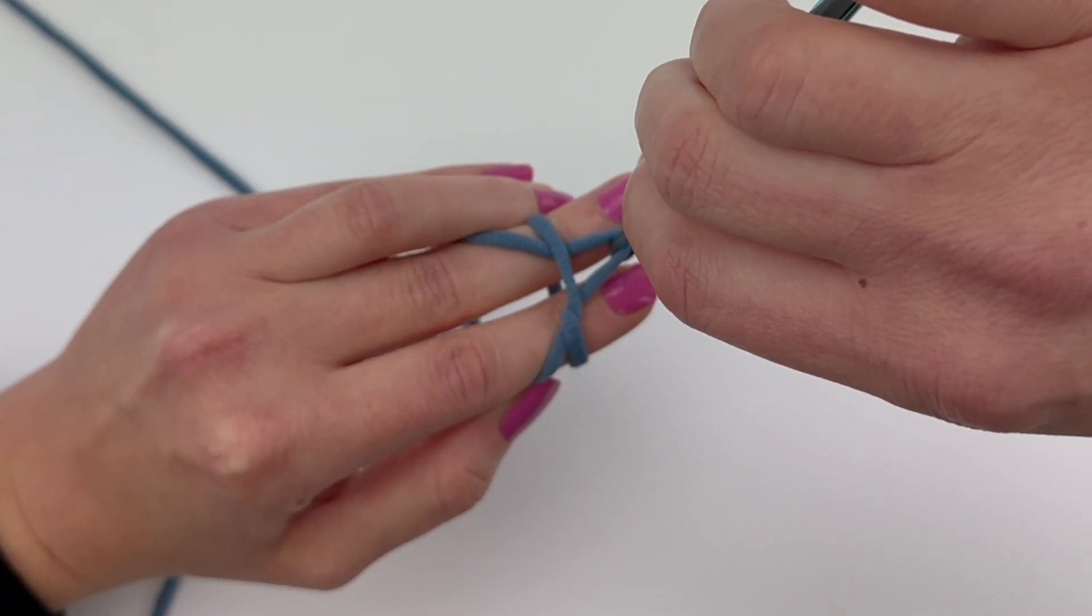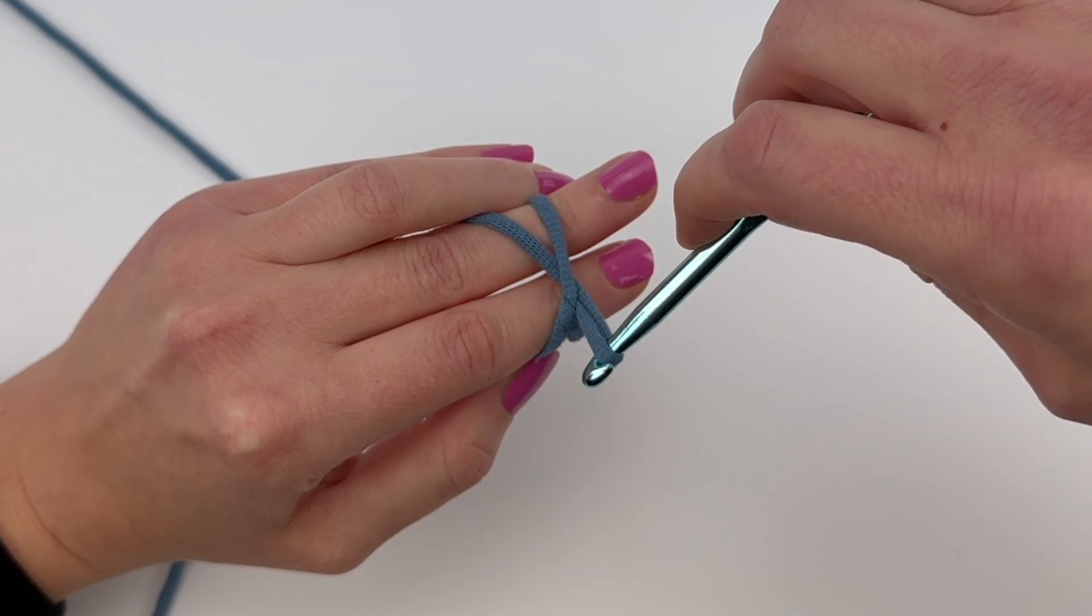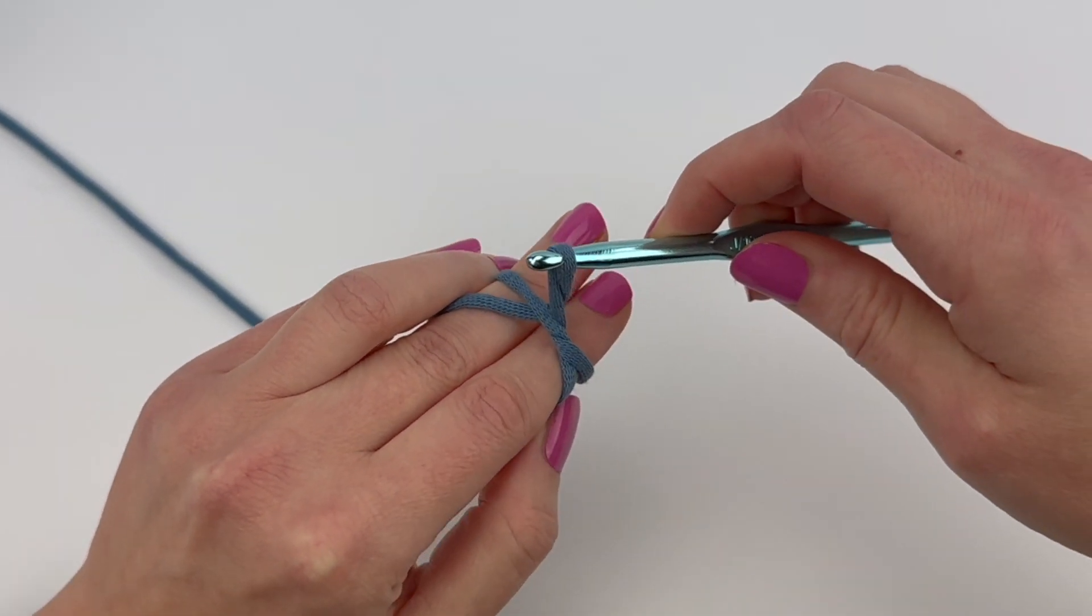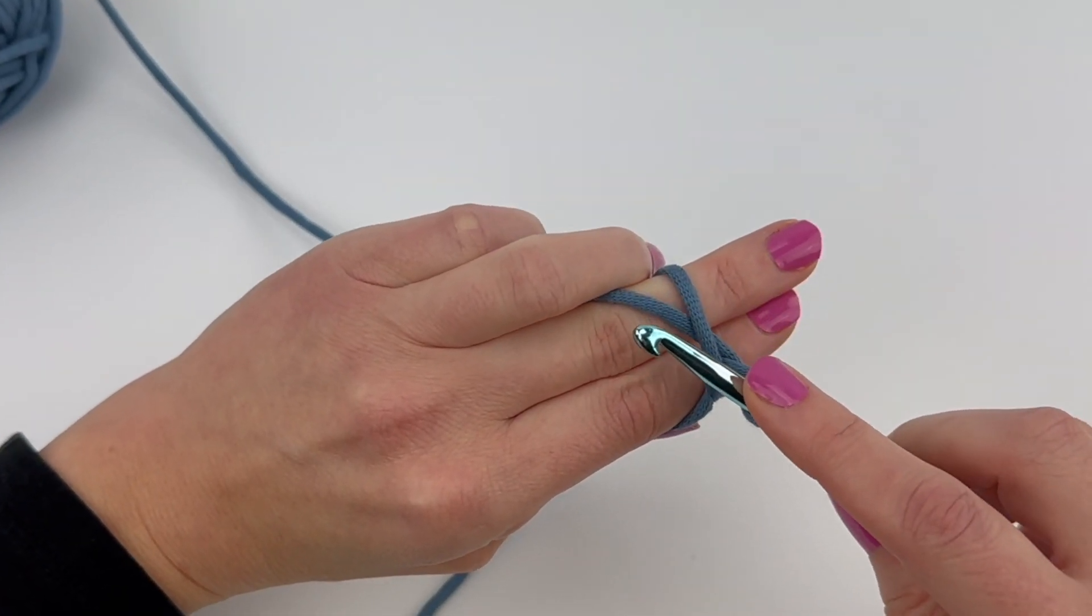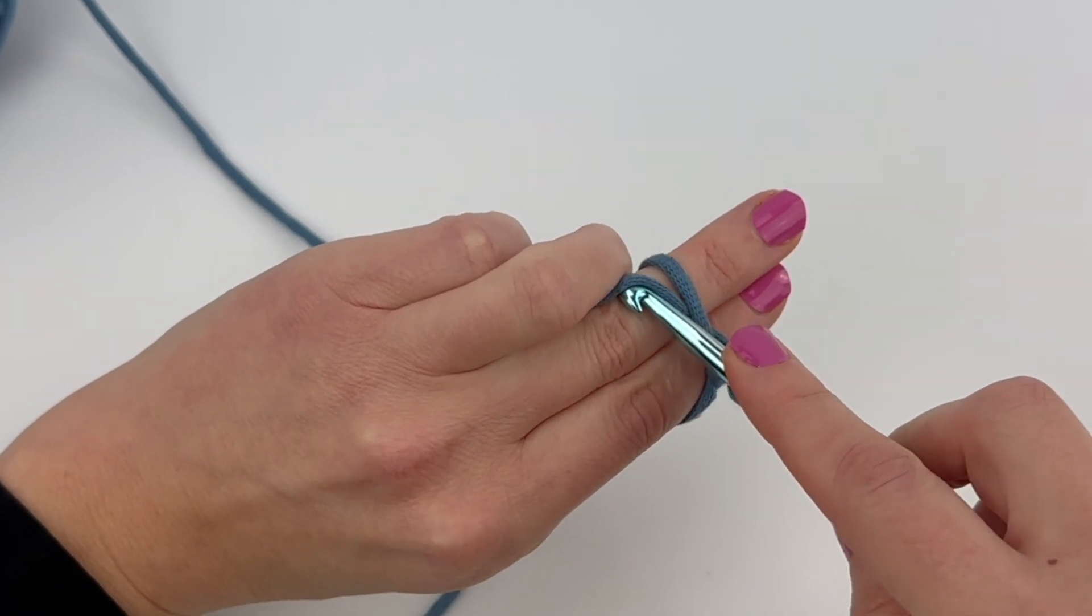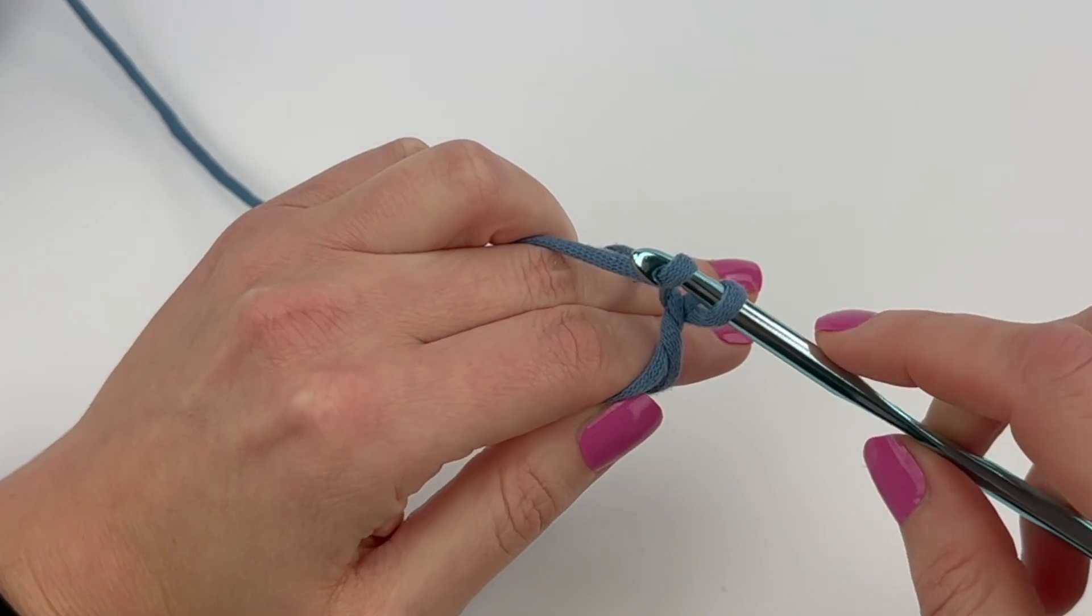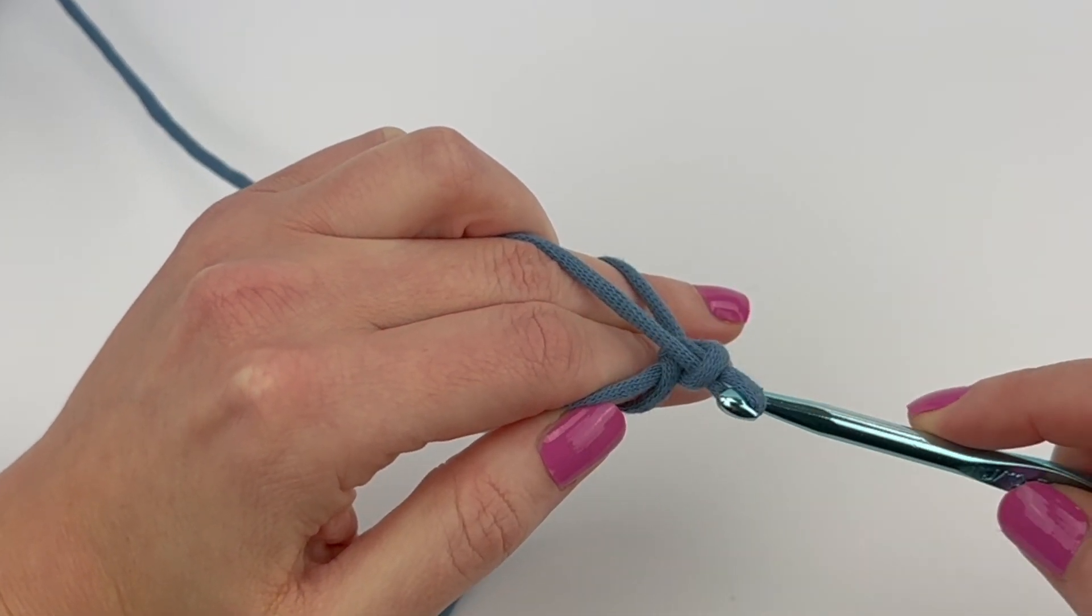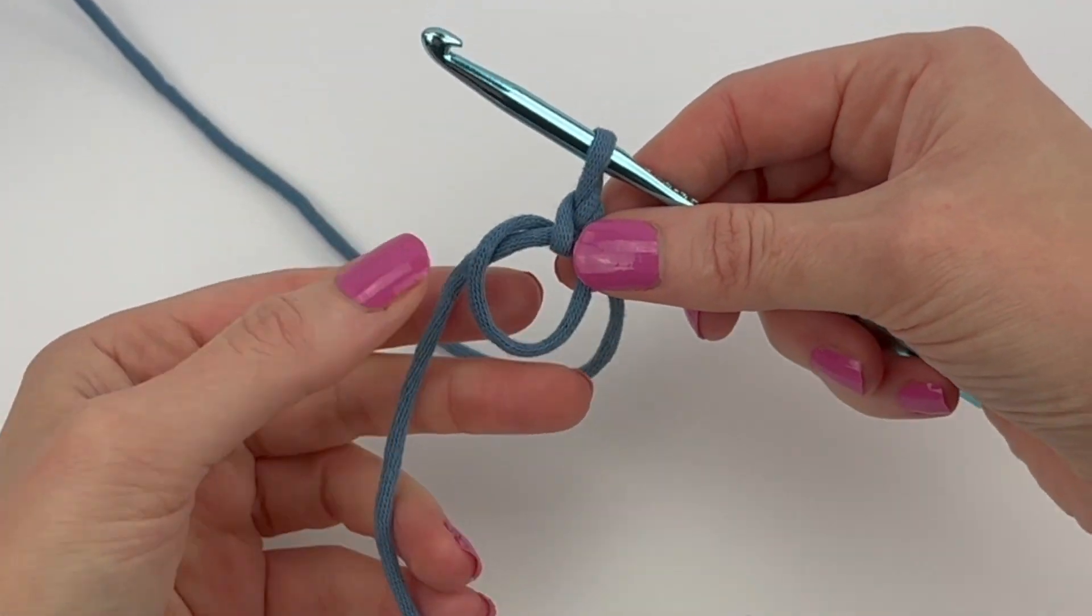Now we're going to rotate our hook towards us to form a loop. Now we're going to use our hook to go back and grab this top left part of the X and bring that yarn through the loop on our hook. Rotate your hook up and now we have a magic circle.